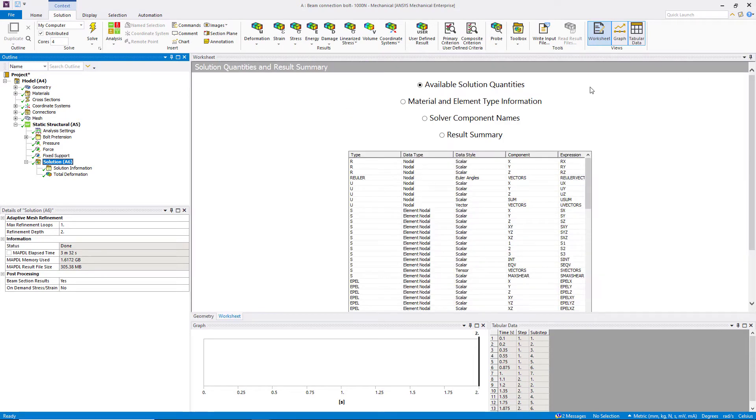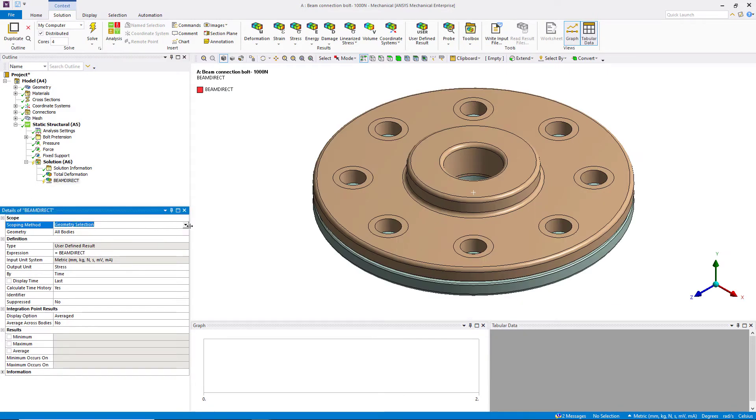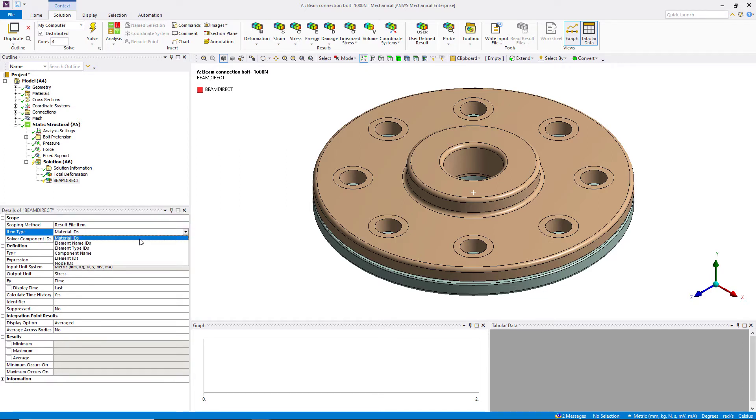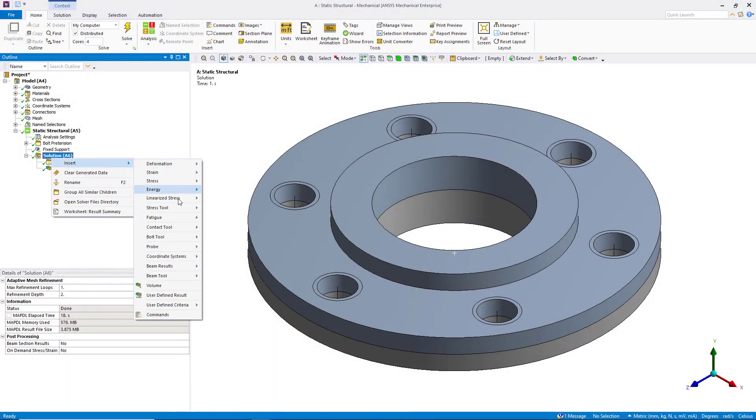If the bolt is modeled using beam connections, then one can use a user-defined result to extract the results in it. If the bolt is modeled as a line body, then one can use the beam tool to extract stresses in it.